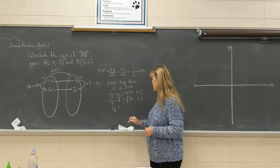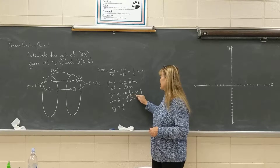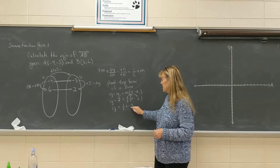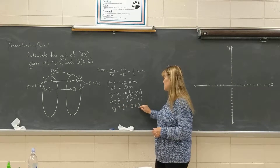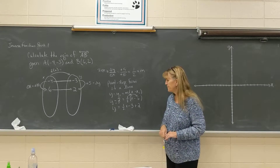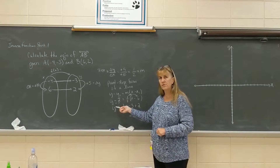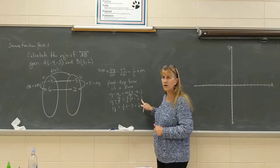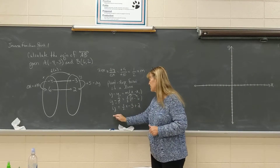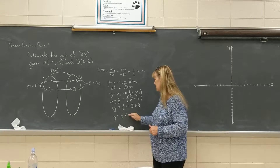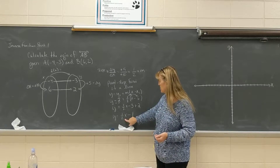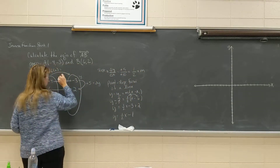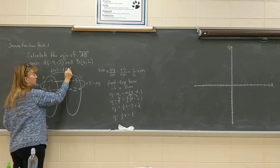I'm going to clean this up a bit. I'll distribute the 1/2: 1/2 times x is 1/2 x, and 1/2 times negative 6 is negative 3. I'm also going to add 2 to both sides of my equation to get that negative 2 out of there. This finalizes my answer as y equals 1/2 x minus 1. So f of x equals 1/2 x minus 1.